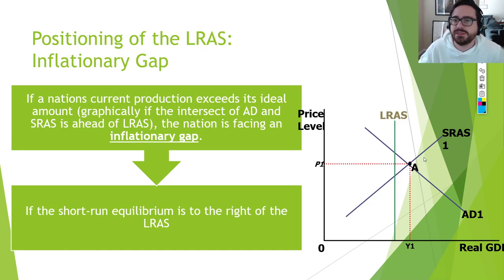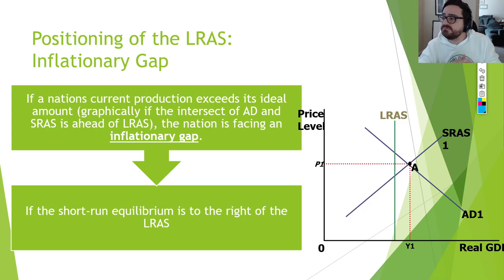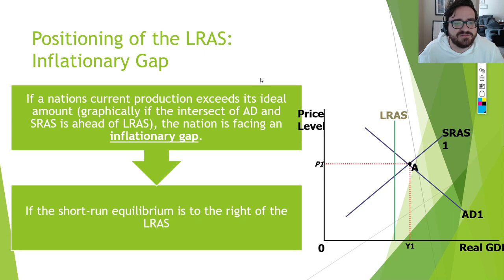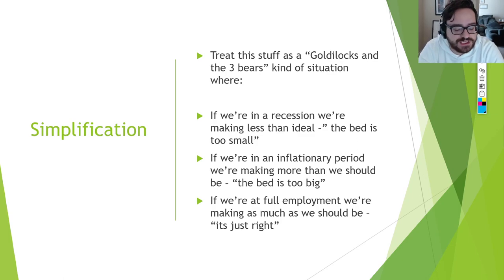If your short-run equilibrium is to the right of LRAS, you have an inflationary gap. The problem here isn't unemployment — our GDP is higher than it should be and we actually have less unemployment than we're supposed to. But if you have more spending than the economy should typically have, you're going to have quite a bit of inflation. Most economists prefer an inflationary gap to a recessionary gap, because producing too much isn't the end of the world.